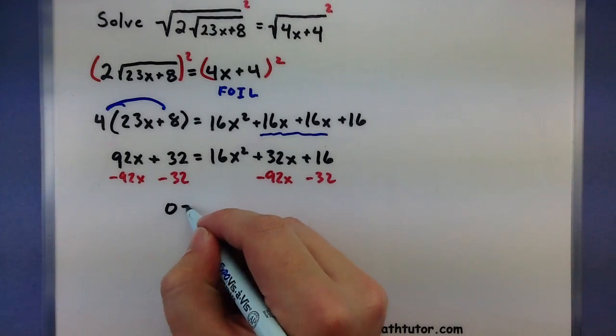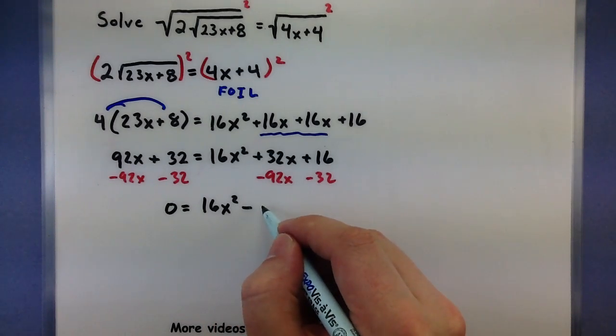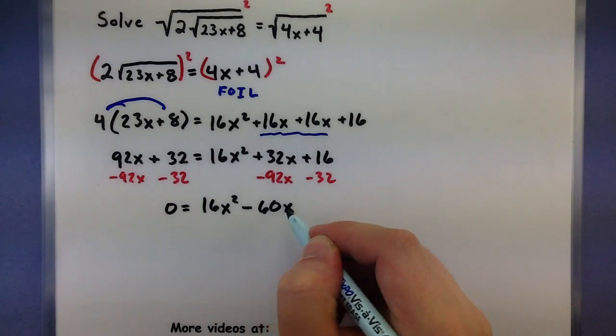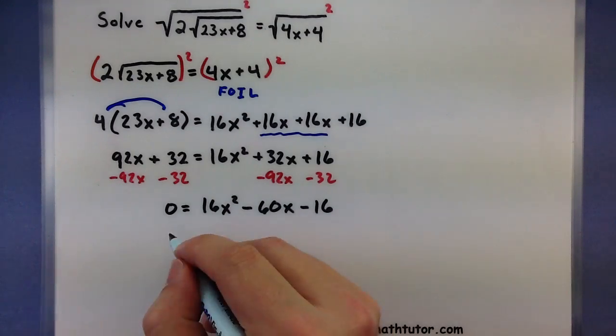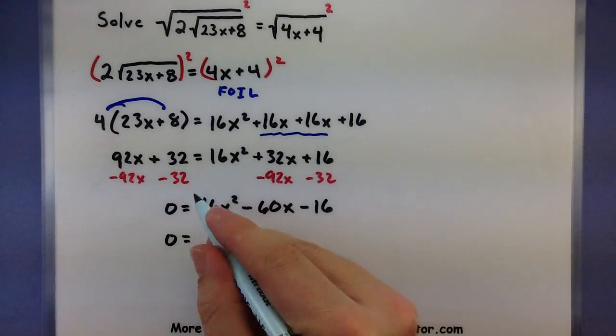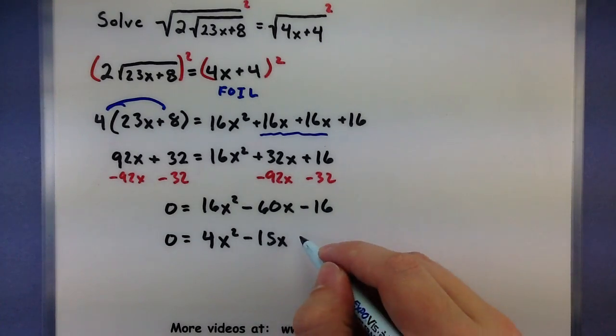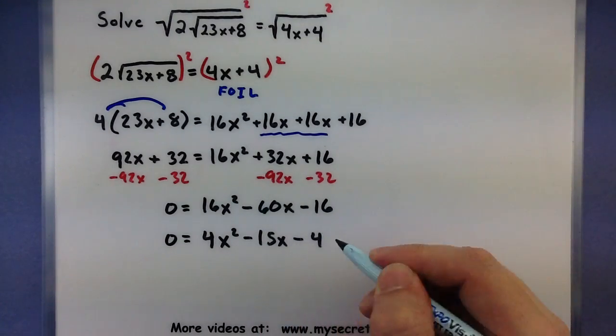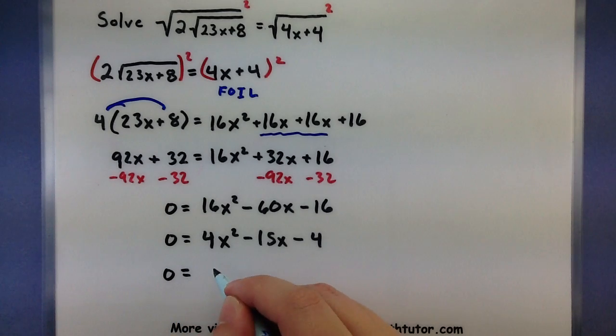So, 0 is equal to 16x squared, minus 60x, minus 16. And those numbers are fairly large, but fortunately, it looks like we can divide everything by 4, and make our job a little bit easier. So, 16 divided by 4, 4x squared. 60 divided by 4, minus 15x. And 16 divided by 4, minus 4. That's a much better equation to work with. And again, you could solve this using the quadratic formula, but I'm just going to factor it.